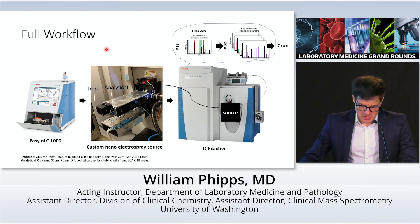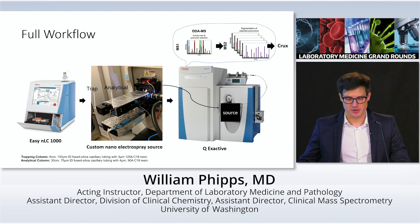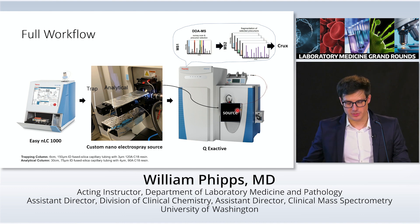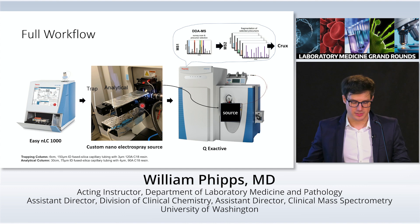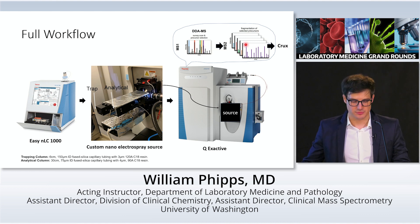Putting these together, the series of new capabilities we're using for amyloid typing and other pipeline projects includes: the nanoflow system with a custom nanoelectrospray source, the QExactive mass spectrometer, data-dependent acquisition, and processing via the Crux pipeline.